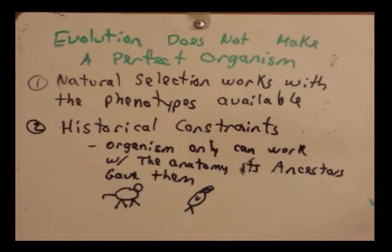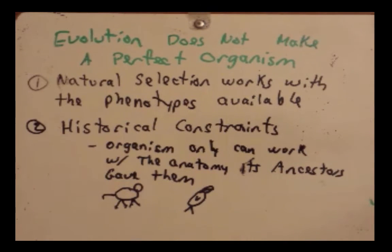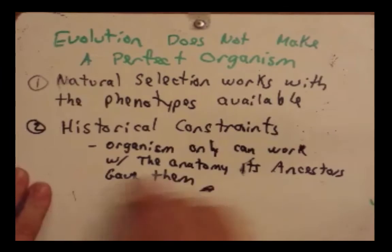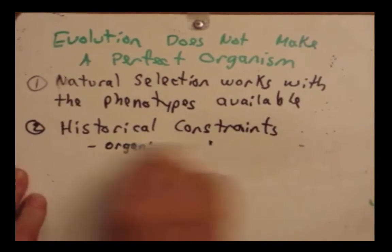The wings of birds and bats evolved from these limbs — evolution didn't erase or get rid of them. It used what it had, and those limbs eventually became wings. You're kind of stuck with the anatomy you're given, and that's what evolution has to work with.